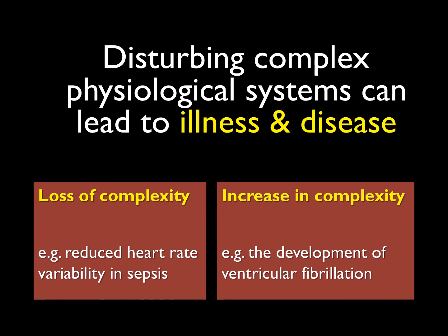Accepting that physiological systems are complex systems and prone to being destabilised in unexpected ways means that we can start to find tentative explanations for catastrophic events for which we currently have no explanation. It might allow us to explain why some people die when stressed in a particular way, such as being restrained, whereas others don't.